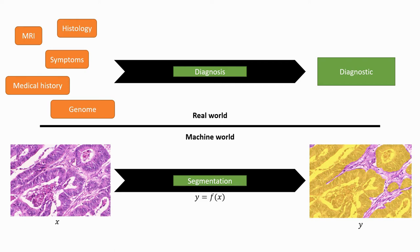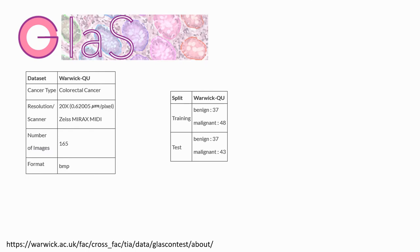So how do we use all this to approach an actual computer vision task? Let's keep with our gland segmentation example. The first thing we should do is look at the information we have on the dataset. This can help us in making sure we correctly set up the validation and testing pipelines, and in seeing how well the machine task reflects the real-world task. Since this dataset comes from a competition, we have some information available about its content.